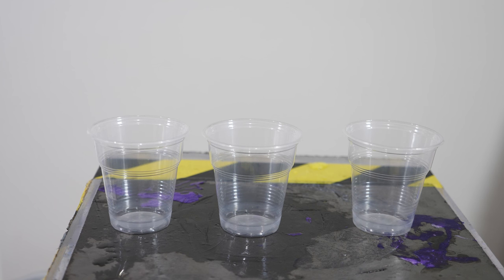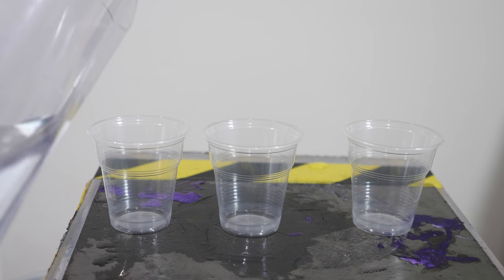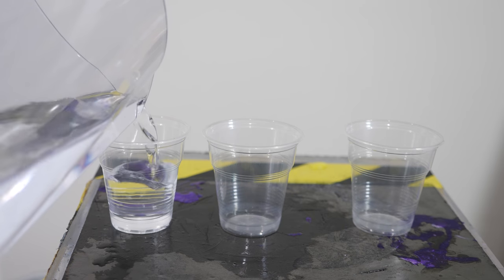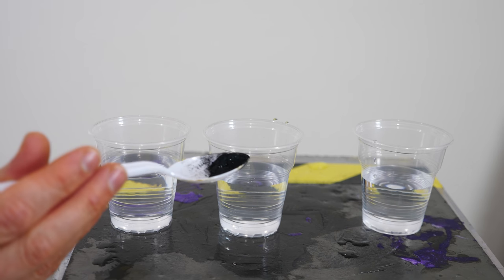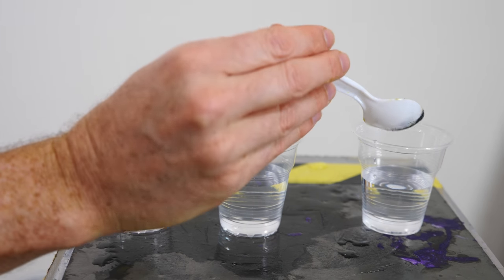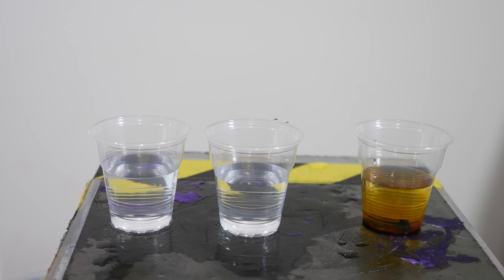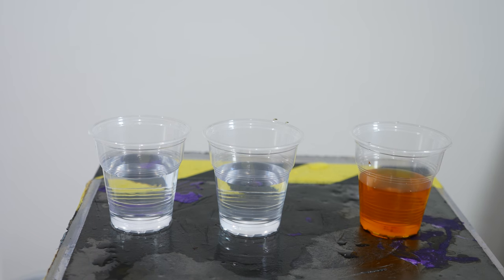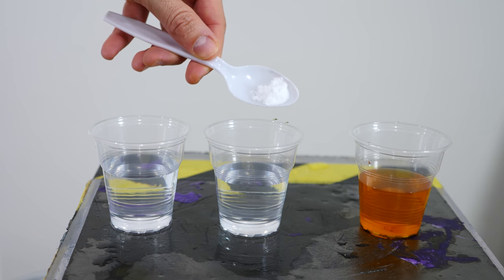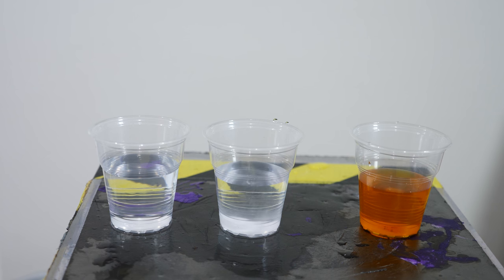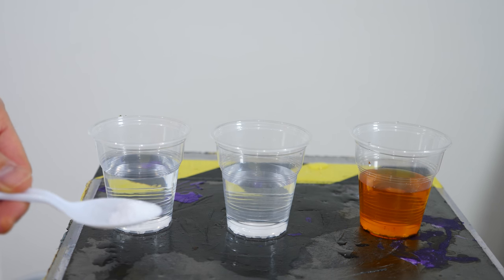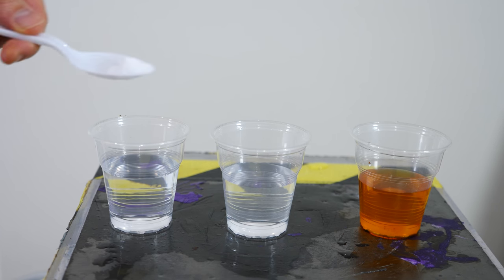All right, so how did I do this? Well, the first thing I did is get three cups of water. And then in one of them, I put some ferric chloride. And then in the next one, I put some sodium fluoride. And then in the last one, I put some potassium thiocyanate.